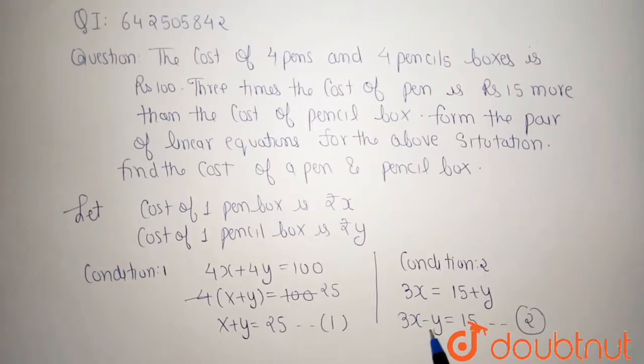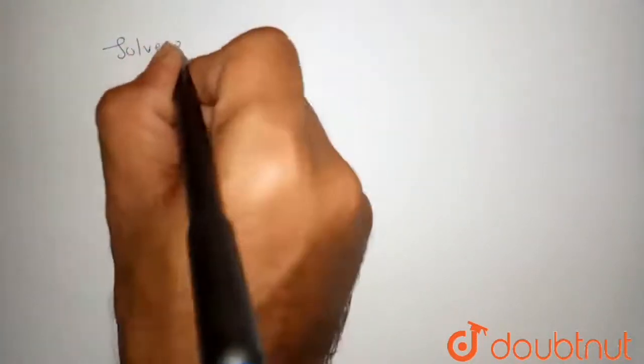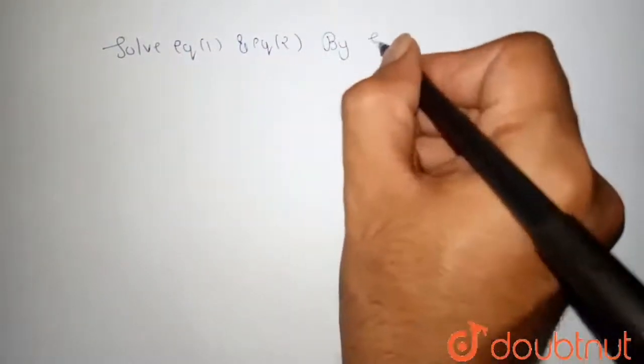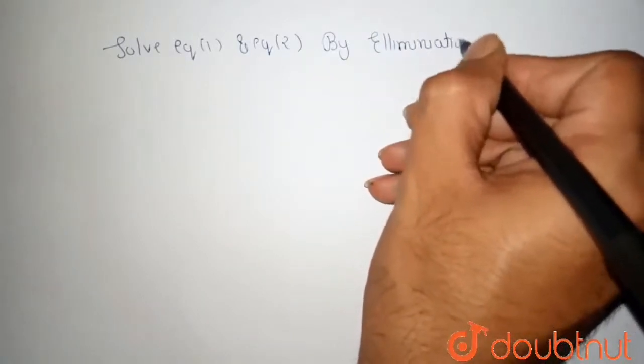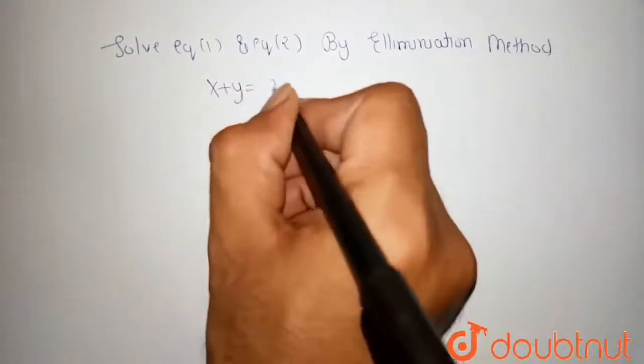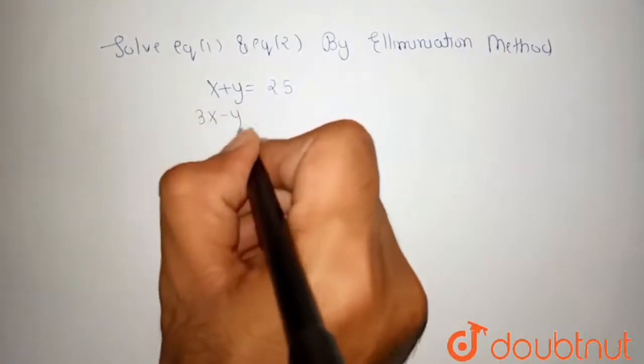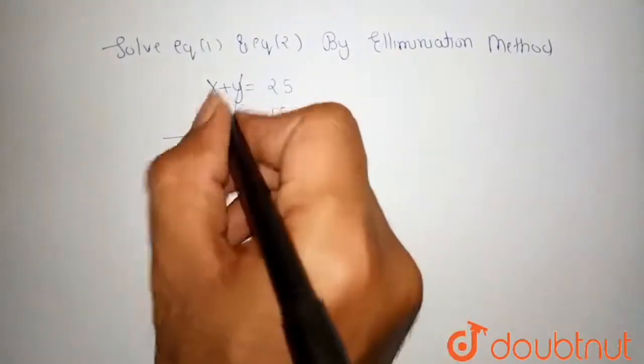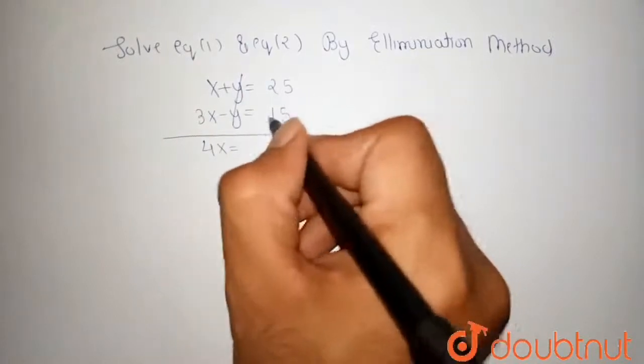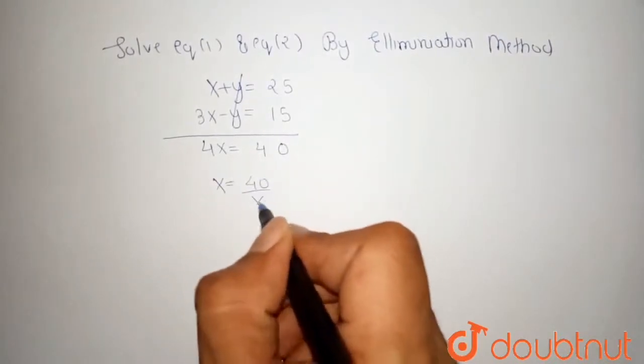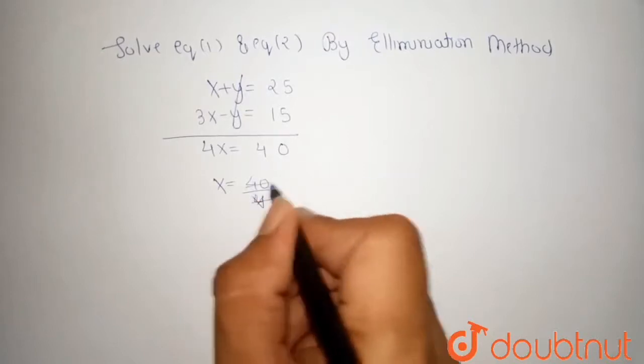Now solve equation number first and equation number second by the elimination method. Our first equation is x plus y equals 25 and the second equation is 3x minus y equals 15. Both are added, so y and y cancel, x and 3x become 4x, and 25 plus 15 becomes 40. So the value of x is 40 upon 4, that means 10. The cost of 1 pen box is rupees 10.